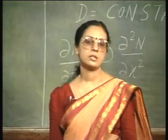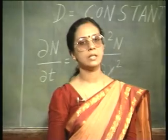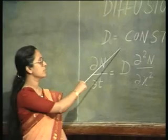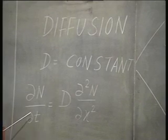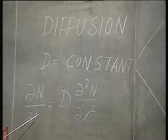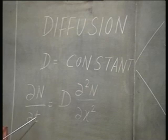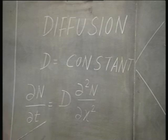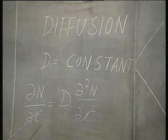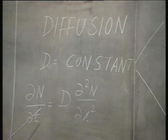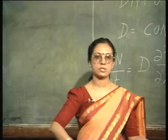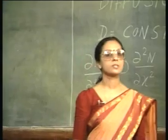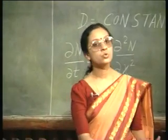In our discussion regarding diffusion, we have seen that if the diffusion coefficient D is assumed to be a constant, then the doping profile can be expressed simply as ∂n/∂t = D · ∂²n/∂x². Now, all that remains is to solve this differential equation subject to various boundary and initial conditions. For this D equal to constant case, there are two possibilities.